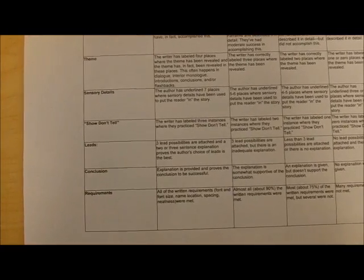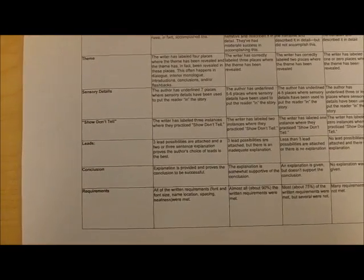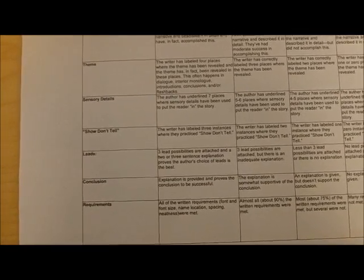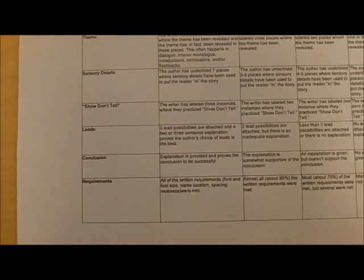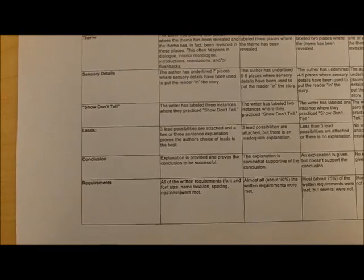Sensory Details: it asks you to underline 7 places where you use sensory details. Show, Don't Tell: you're supposed to label 3 places where you show and don't tell. Next is Leads — you need to attach your 3 lead possibilities that you wrote, and include a 2 or 3 sentence explanation proving your choice of lead is the best. Finally, you need to include below your conclusion an explanation of why your conclusion is effective.